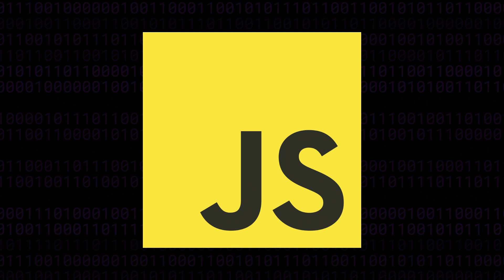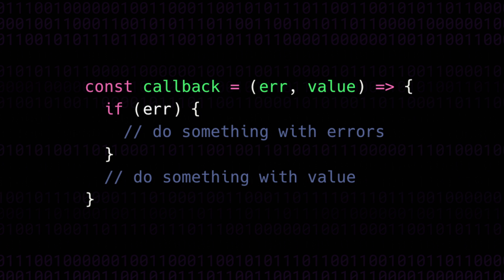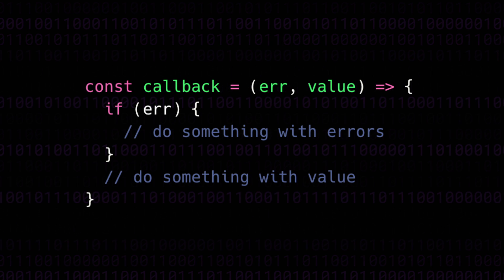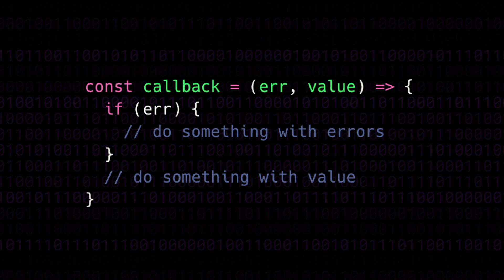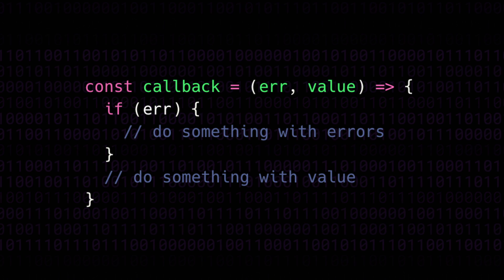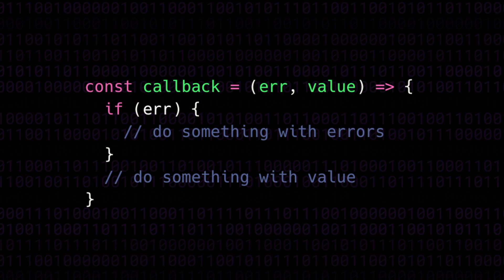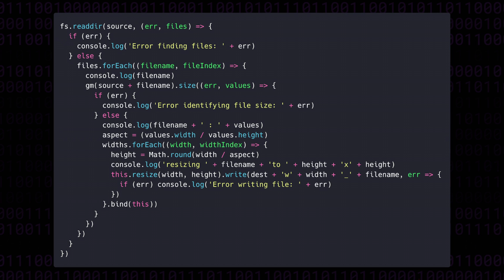If you've been programming in JavaScript long enough, you'll remember a time when all asynchronous code was written with callbacks. While an extremely useful primitive, callbacks tend to lead to unwieldy, hard to debug and hard to communicate code. It was — and if you're unlucky enough, still is — an easy way to end up in a situation like this: the so-called callback hell.